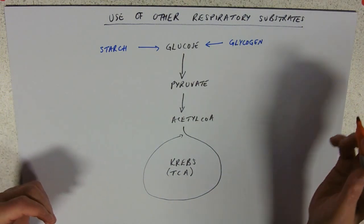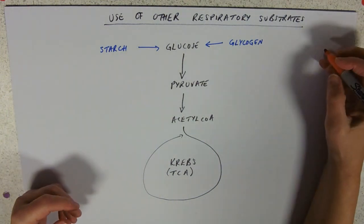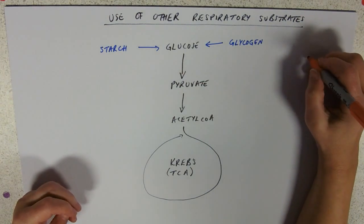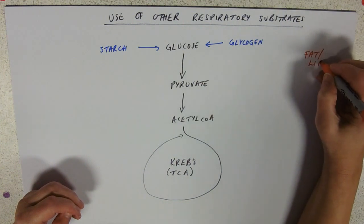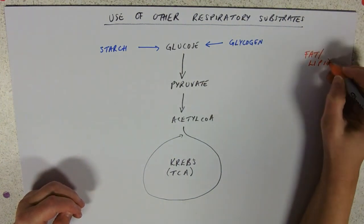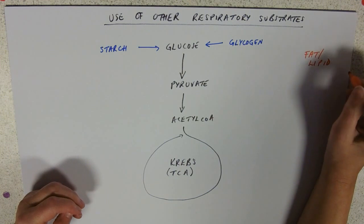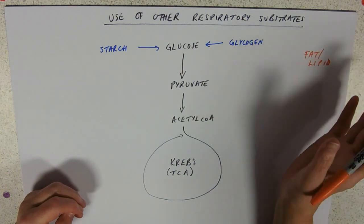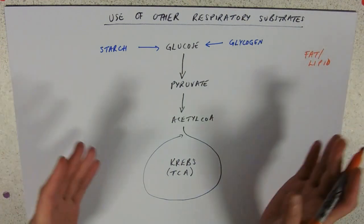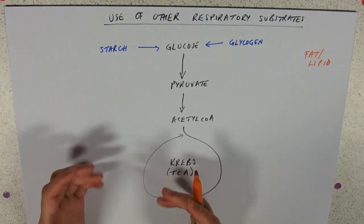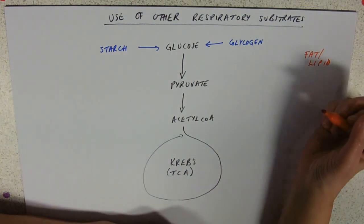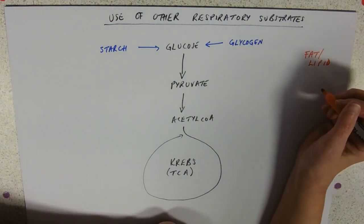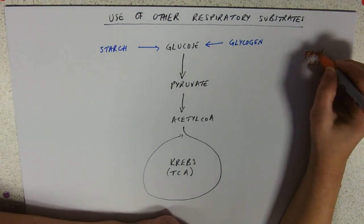Another energy storage molecule is fat, or as I like to call it, lipid — it sounds fatty and lipidy and adiposey. So you can break down fats and lipids, and of course plants do this as well. Remember that they're mainly producing unsaturated fats, and we call those oils.